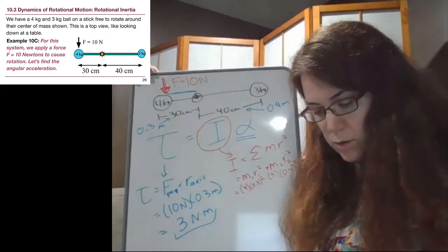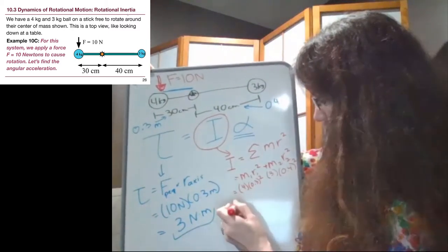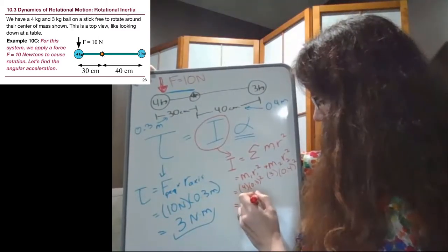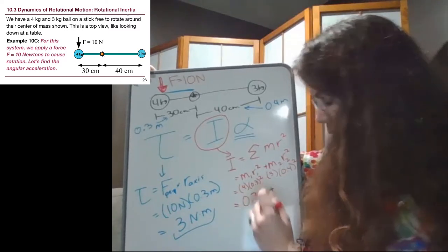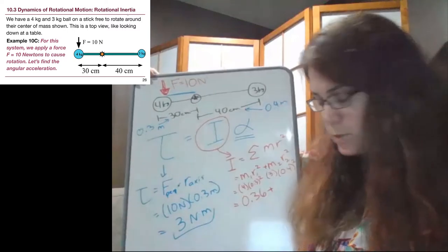So if we calculate those two, the first term, just so that we can see where they come from, the first term is 0.36, and the second term is 0.48.